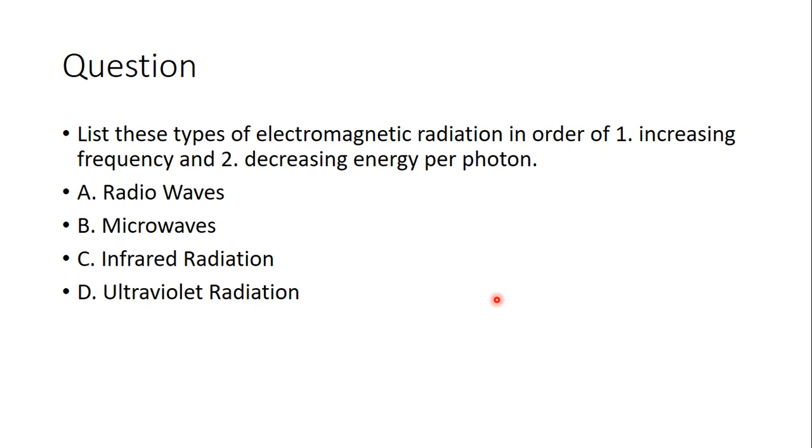All right, let's take a look. So your highest frequency is your ultraviolet. Then your infrared, your microwaves, and your radio waves. And if you go by energy, your highest energy is also ultraviolet, infrared, microwave, radio waves. So this shows you that things with high energy have very high frequencies. That's the relationship between the two.